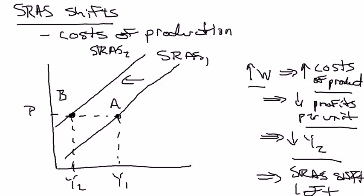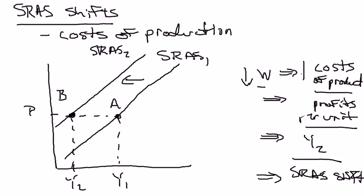Likewise, if there were a decrease in nominal wages, that would decrease costs of production, which would increase profits per unit of output. And since firms are greedy profit maximizers, they'd want to produce more, which would shift the short-run aggregate supply curve to the right — they'd want to produce more at this price level.